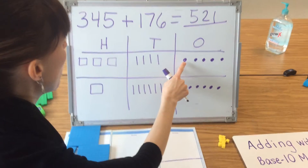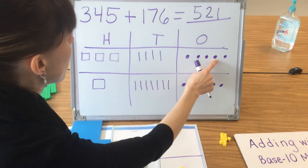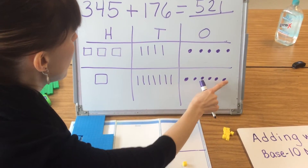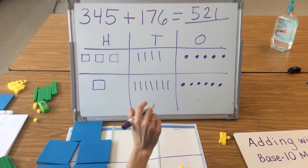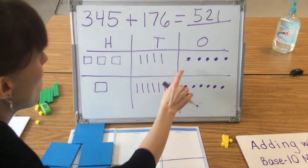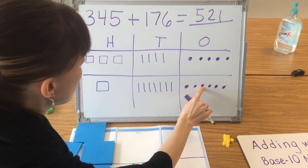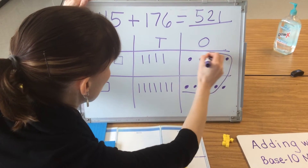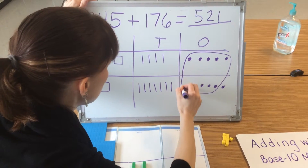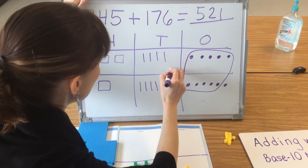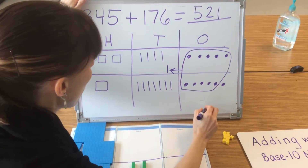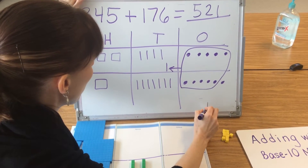I count my ones: 1, 2, 3, 4, 5, 6, 7, 8, 9, 10, 11. I have 11, so I have to compose a 10 with 10 ones: circle 1, 2, 3, 4, 5, 6, 7, 8, 9, 10. I circle those 10 ones and remember to draw my arrow into the tens place and make my new 10 there. I still have 1 in the ones place.